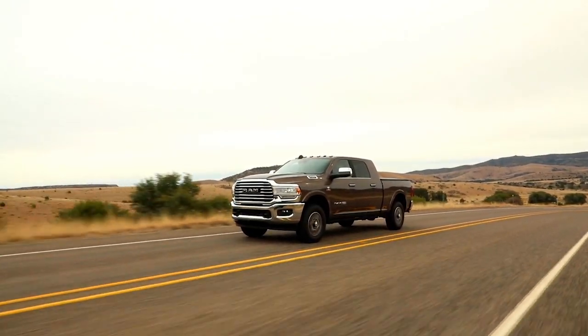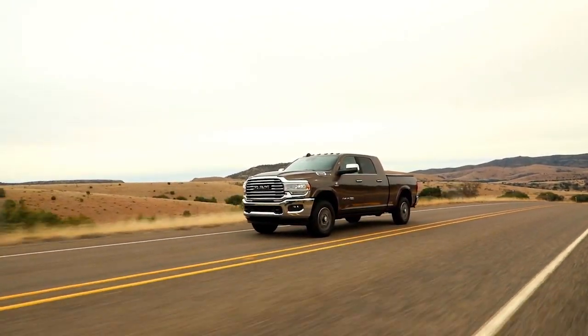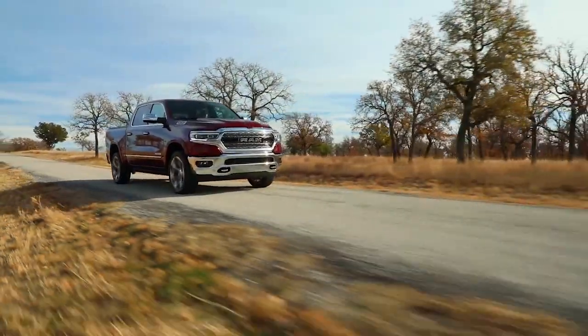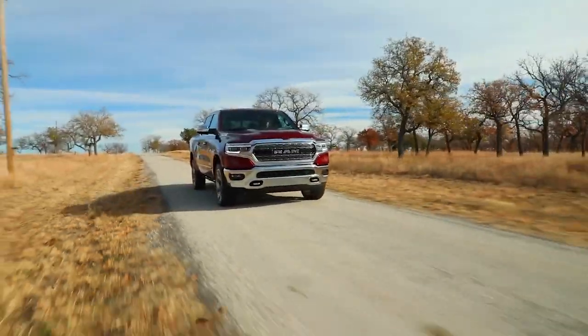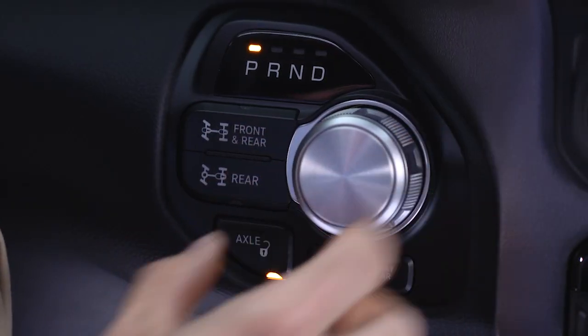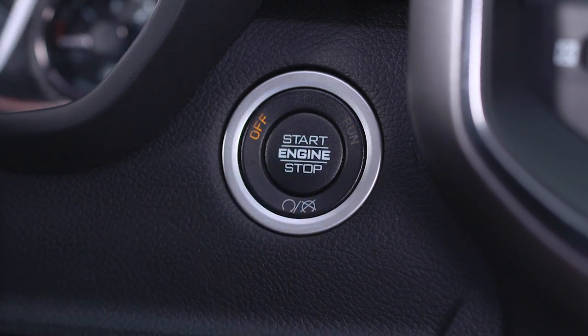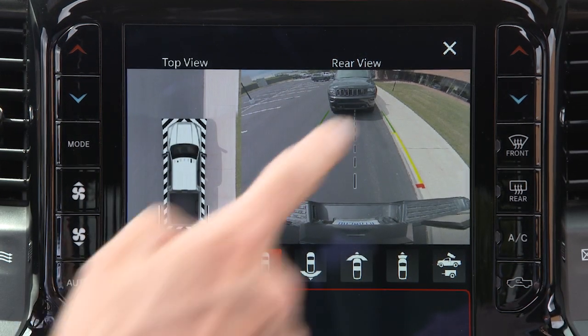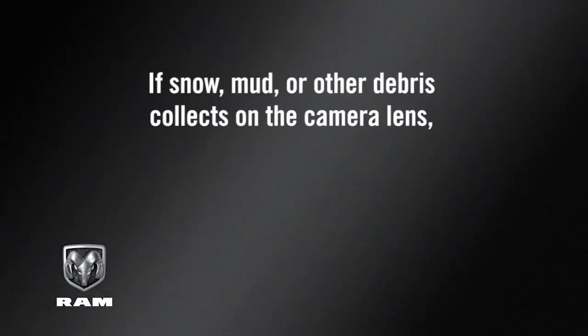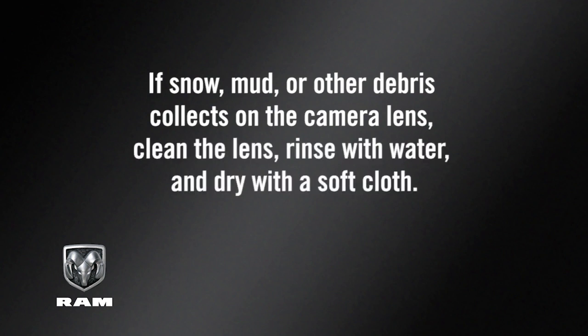The system deactivates in the following conditions: the vehicle is out of reverse for more than 10 seconds at speeds at or above 8 miles per hour or 13 kilometers per hour; the vehicle is shifted into park; the ignition is cycled off; or if the driver presses the X button on the display screen if the vehicle is in park, neutral, or drive. If snow, mud, or other debris collects on the camera lens, clean the lens, rinse with water, and dry with a soft cloth.